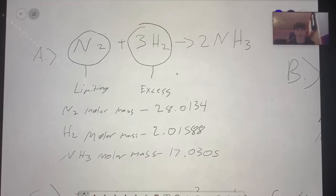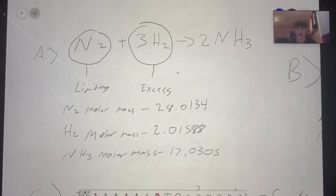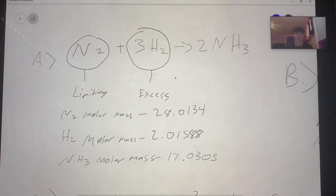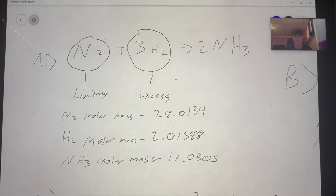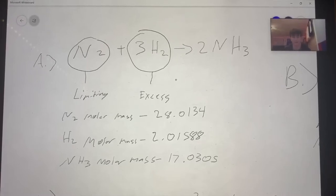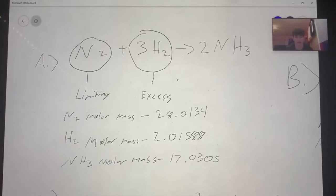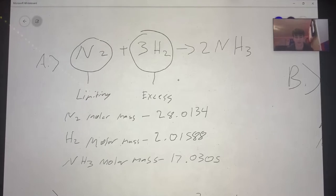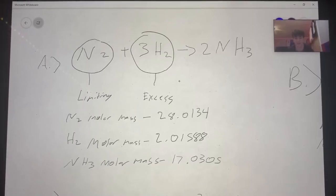In part A we're going to find the limiting and excess reactants. The limiting reactant is N2 because this runs out first in the reaction, and H2 is the excess because there's extra afterwards.